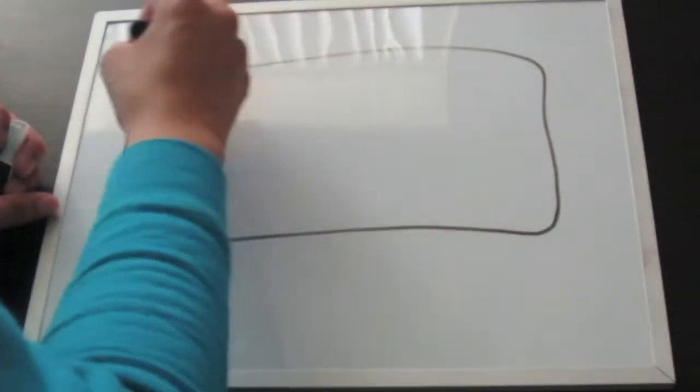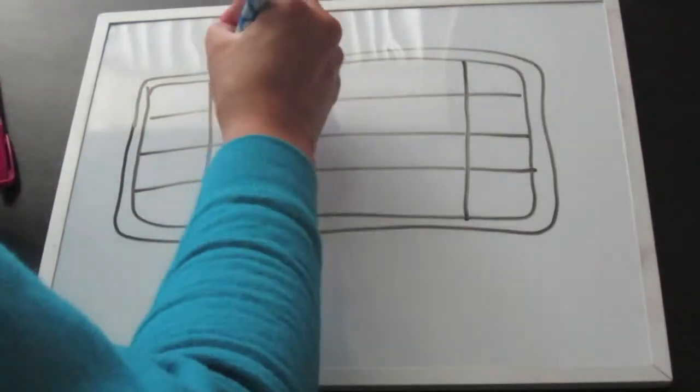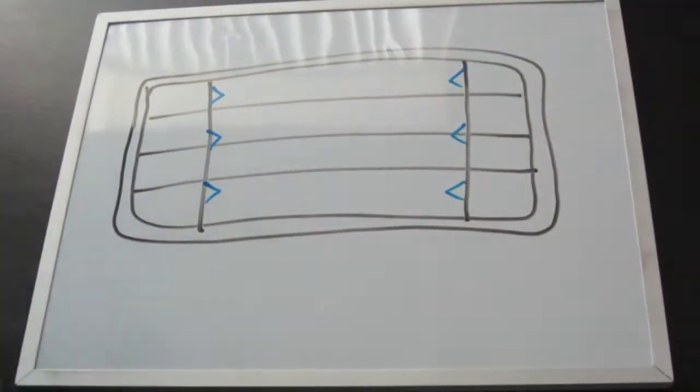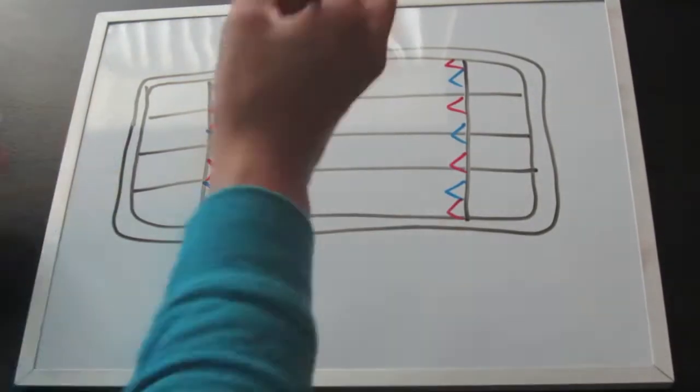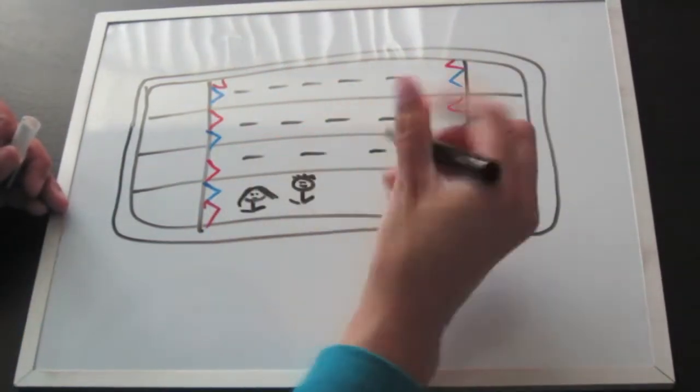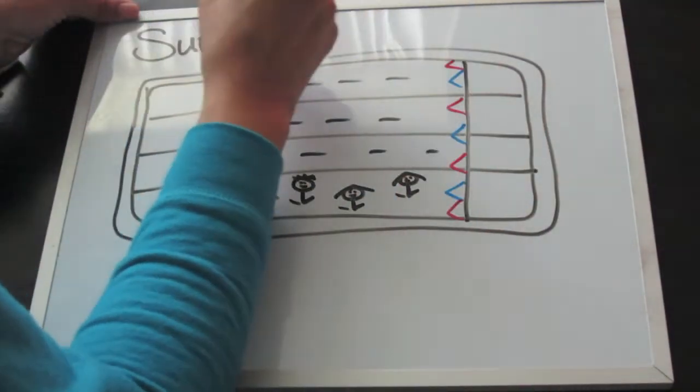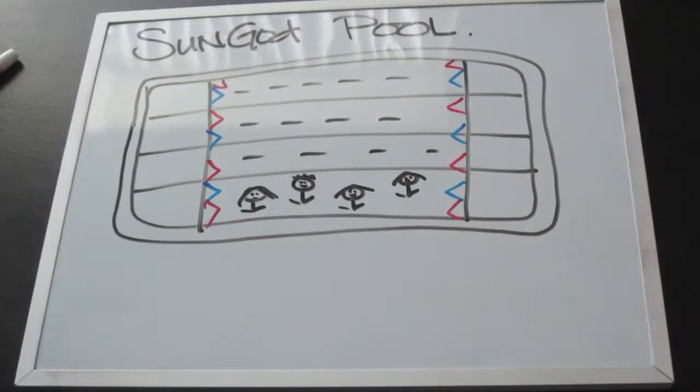But before we were even allowed to use the pool, our parents told us we had to take swimming lessons so we would actually know how to swim. So we went to the local rec center and we took lessons at Sun God. The lessons actually turned into swimming competitively and me and Kimmy were just in love with the water. Our life was all about swimming.